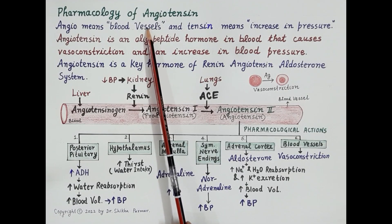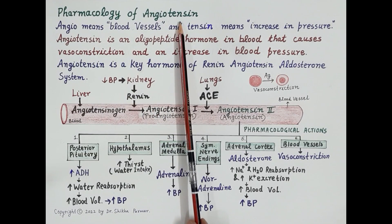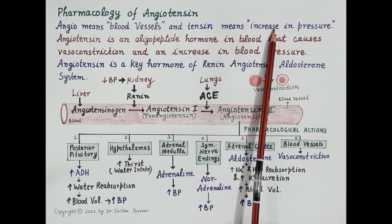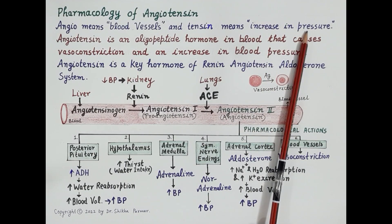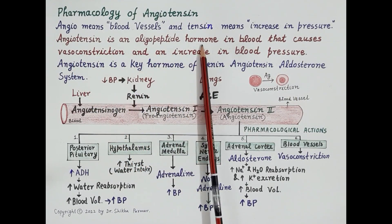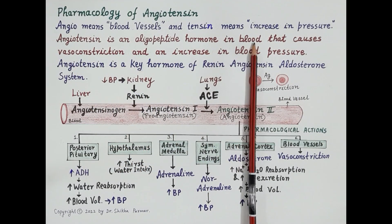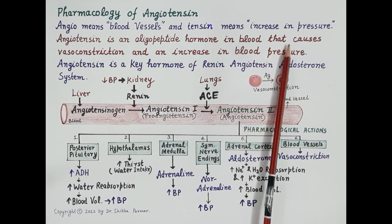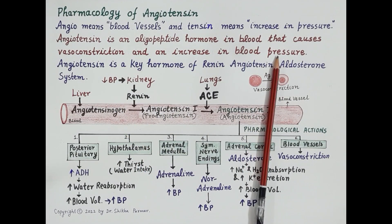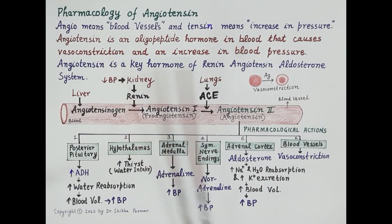In this video we will study pharmacology of angiotensin. Angio means blood vessels and tensin means increase in pressure, so angiotensin increases blood pressure. Angiotensin is an oligopeptide hormone circulating in the blood that causes vasoconstriction and an increase in blood pressure.